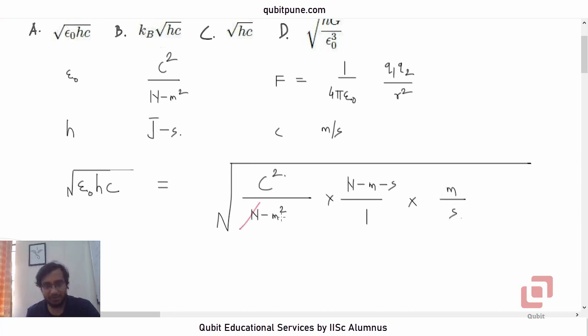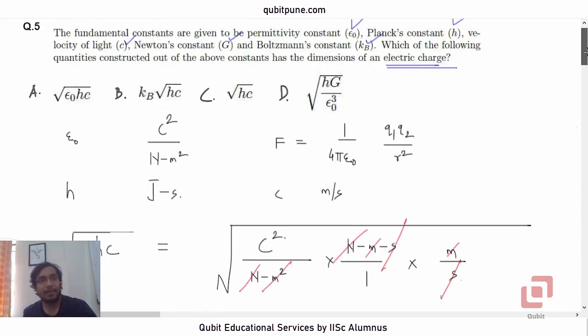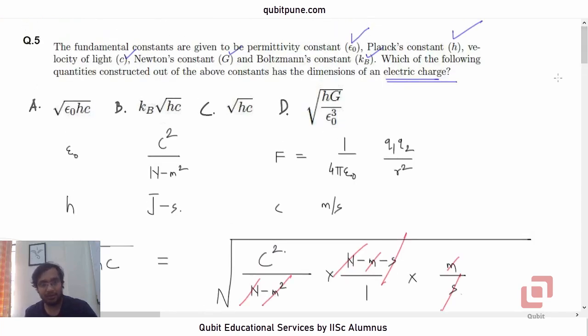So Newton, Newton cancels, meter squared, meter meter cancels, second, second cancels, so did we get root of c squared or c itself, that is the charge, yes, so we have got the correct option as A.